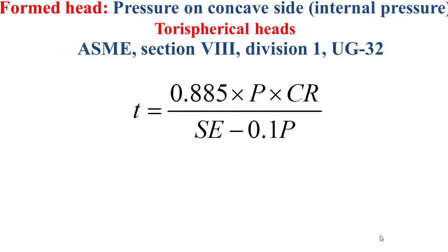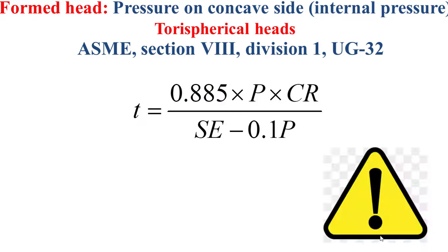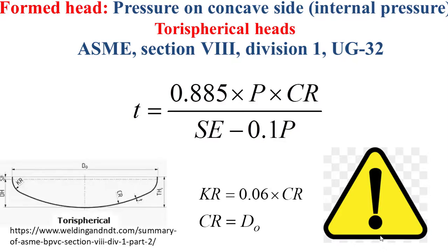Pay attention: this formula is valid only when the knuckle radius is equal to 6% of the internal crown radius and the crown radius is equal to the outer diameter of the formed head skirt.